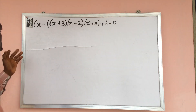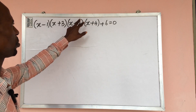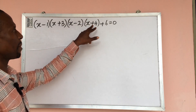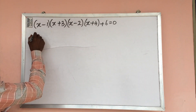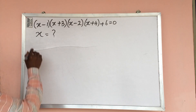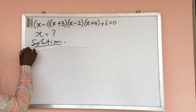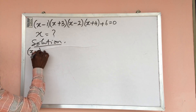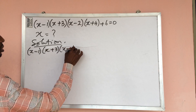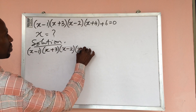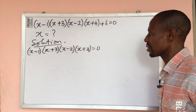The question says: (x − 1)(x + 2)(x − 2)(x + 4) + 6 = 0. What will be the value of x? Let's take the solution to this question, which gives us (x − 1)(x + 3)(x − 2)(x + 4) = 0.